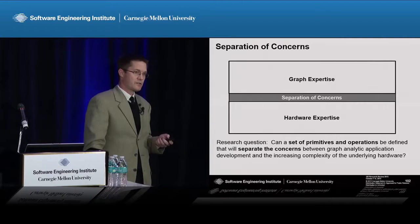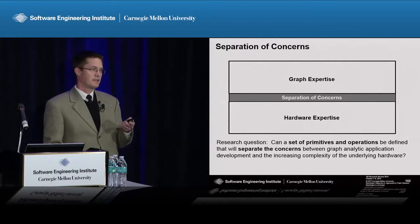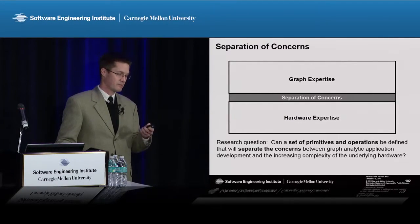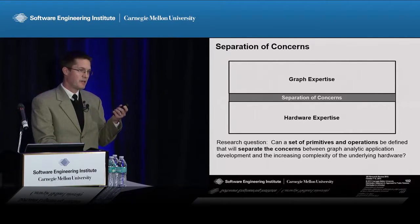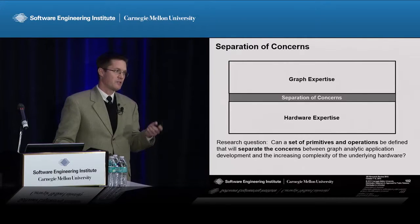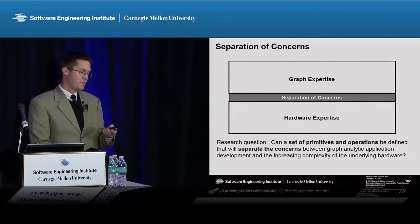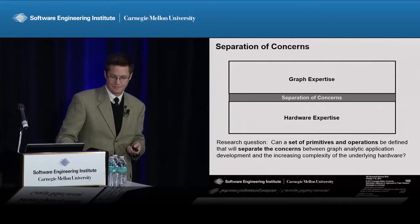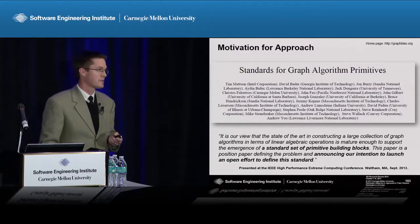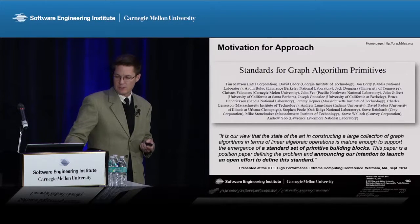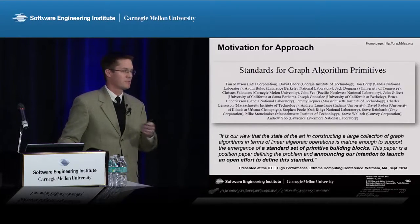In graph analytics today, the state of the art is researchers who want to publish a paper need to develop a very efficient graph algorithm — the canonical one being breadth-first search, which is also what the benchmarks track. They need to be experts in graph analytics and also experts in whatever hardware they have. So every research paper is almost a one-off approach.